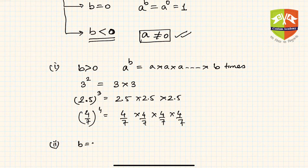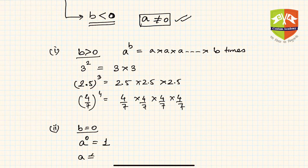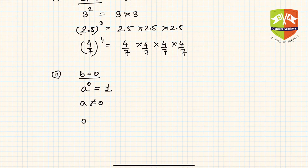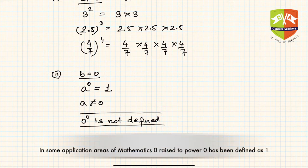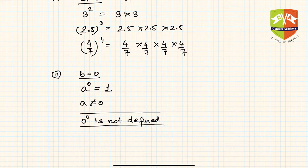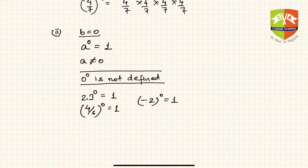In Case 2, when b = 0, by definition any real number a (but not 0) raised to the power 0 equals 1. Note that 0^0 is not defined. For example: 2.3^0 = 1, (4/6)^0 = 1, and (-2)^0 = 1.